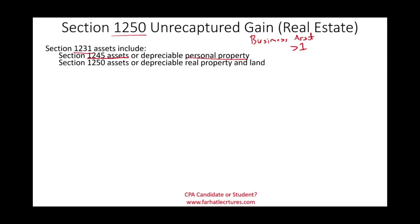Those are Section 1245 assets, which are movable, versus Section 1250 assets, which are real property and land. Real property is depreciable; land is not depreciable. Simply put, Section 1250 assets are not movable. A warehouse is attached to the land. Land is land. A building is a building. You cannot move them around — unmovable.